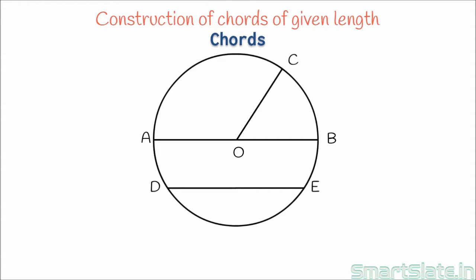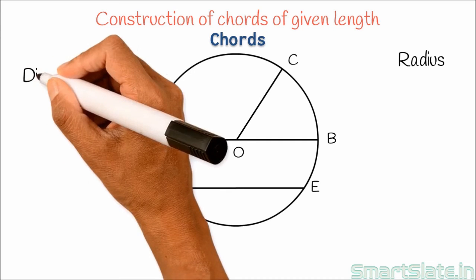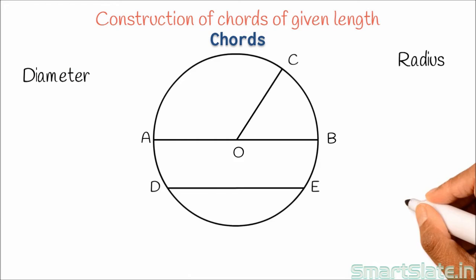Let me begin with chords. Observe this figure. OC is radius, the distance between any point on the circle and center of the circle. AB is the diameter. Diameter is the line touching two points of the circle which also intersects with center.